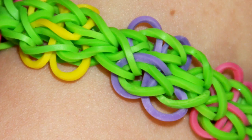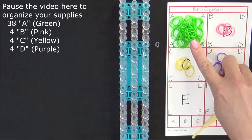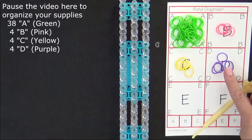This is an intermediate level design. To make this bracelet you will need 38 A colored bands, four B colored bands, four C colored bands, four D colored bands, and a C-clip.